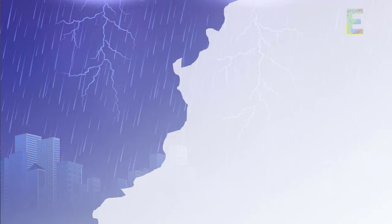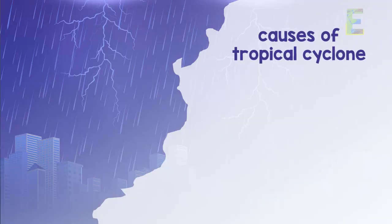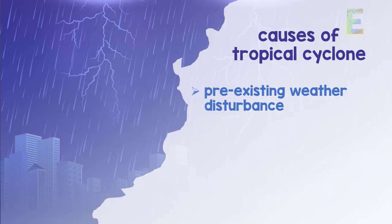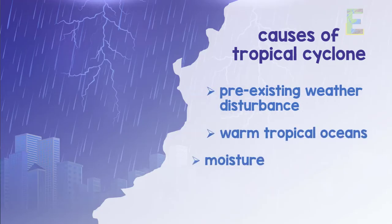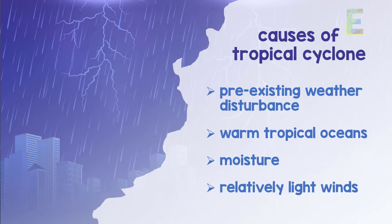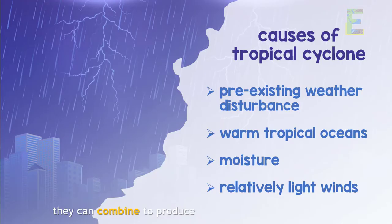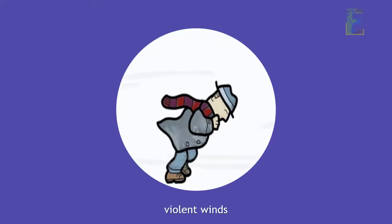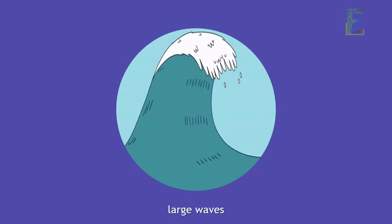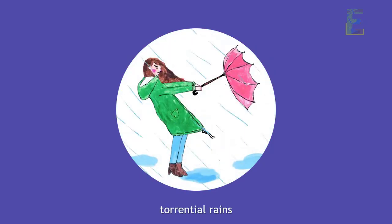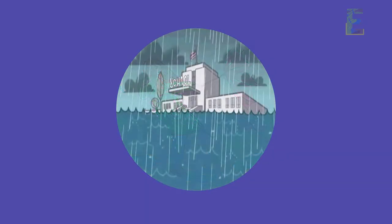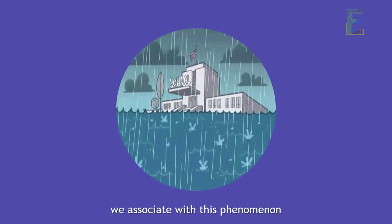The ingredients for tropical cyclones to happen include a pre-existing weather disturbance, warm tropical oceans, moisture and relatively light winds. If these conditions continue long enough, they can combine to produce the violent winds, large waves, torrential rains and floods we associate with this phenomenon.